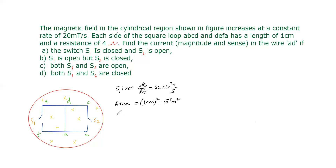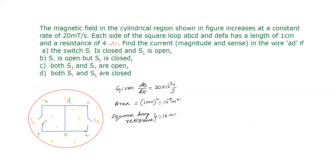The square loop resistance is 16 ohm, because each side is 4 ohm and there are four sides. Now to find the current in wire AD for each case, we first find the EMF in the loop. Current equals EMF divided by resistance.